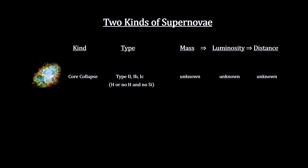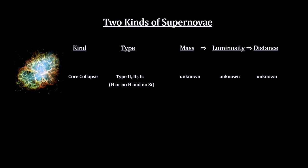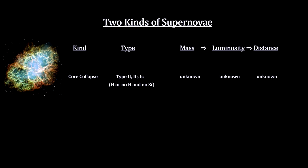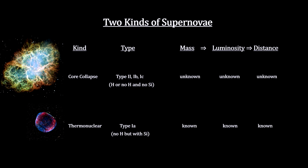The luminosity of a supernova depends on the mass of the star. If we knew the mass, we'd have ourselves another standard candle. But for most explosions across the cosmos, we don't have that information. But there is one scenario where we do.